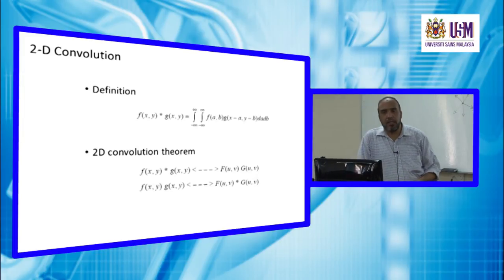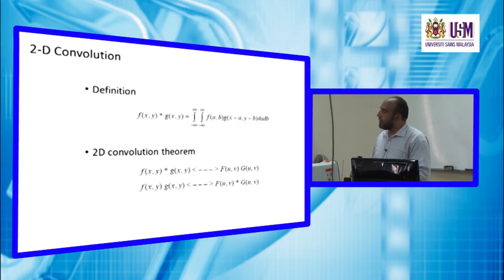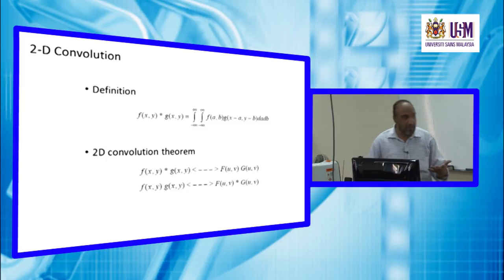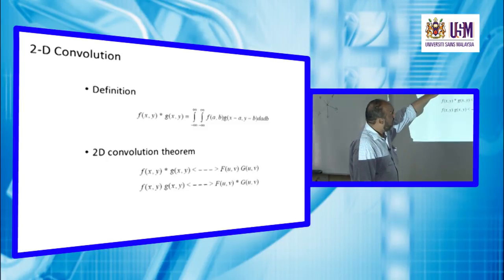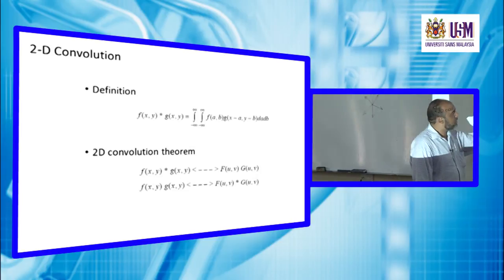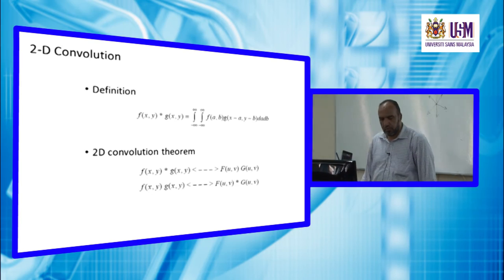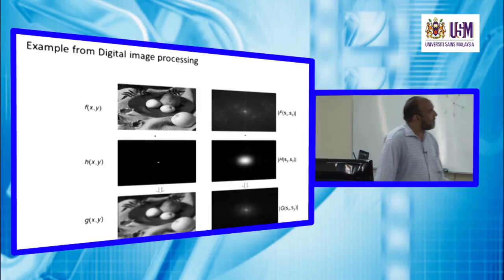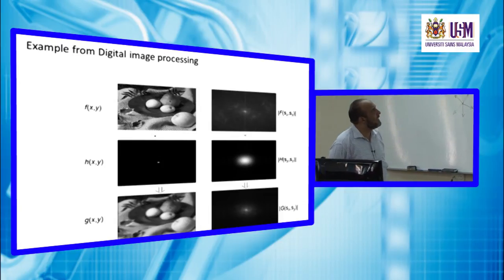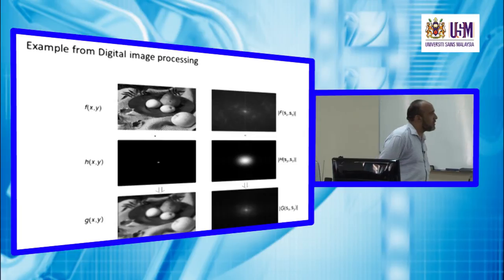We can also apply two-dimensional convolution, and this is another reason why we should use the Fourier transform — in two dimensions the situation is more complicated and very hard to compute in time or space domain, so the best practice is to carry it out in the frequency or wave number domain.